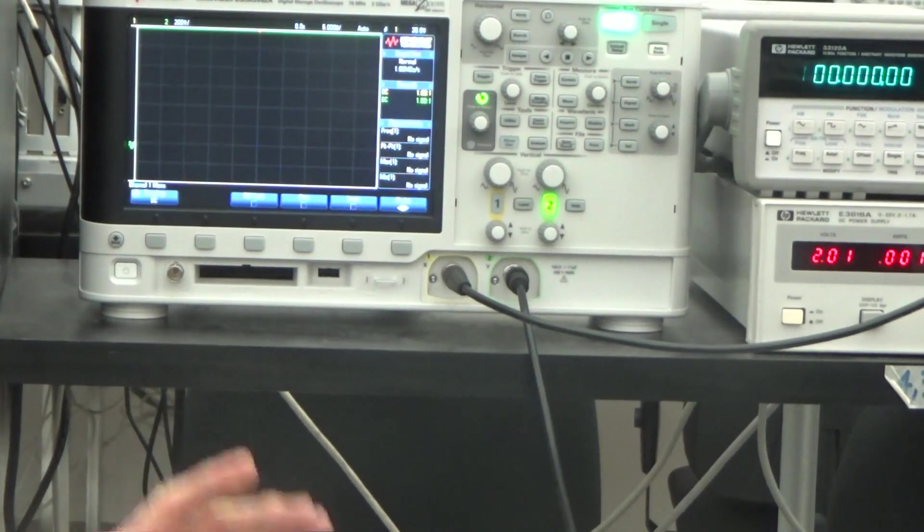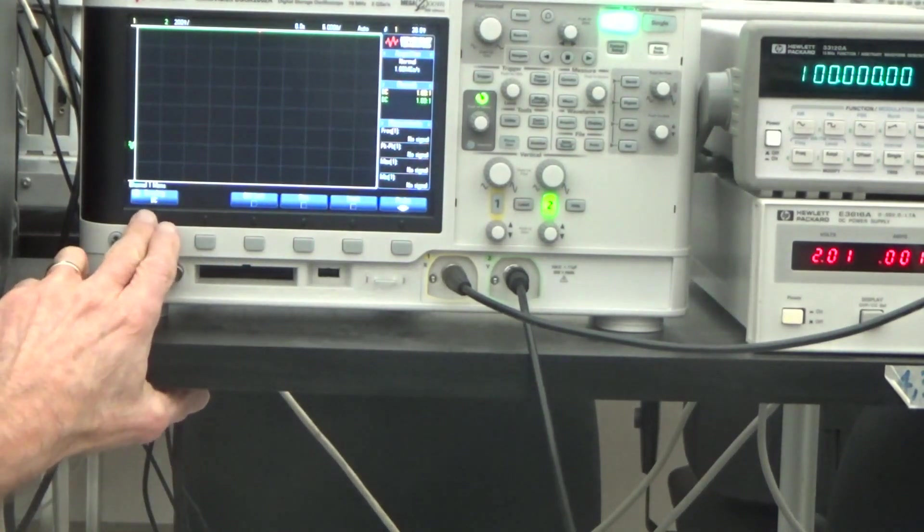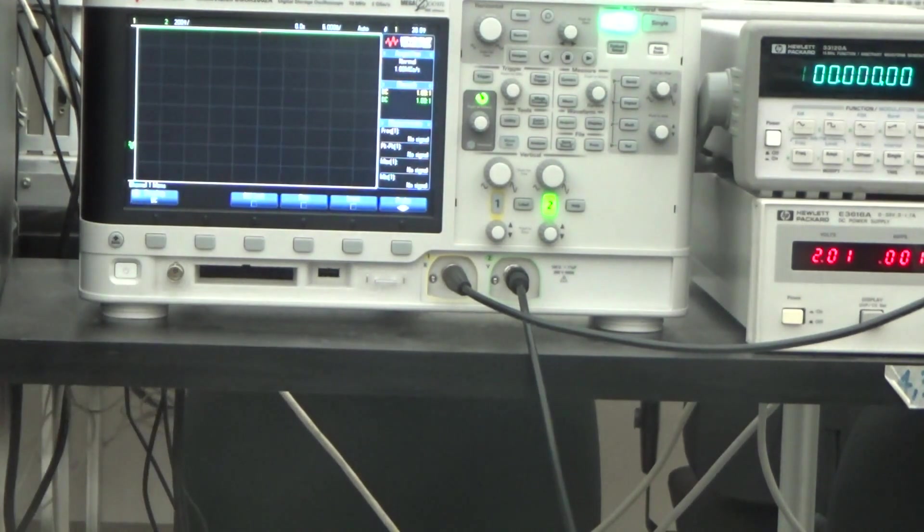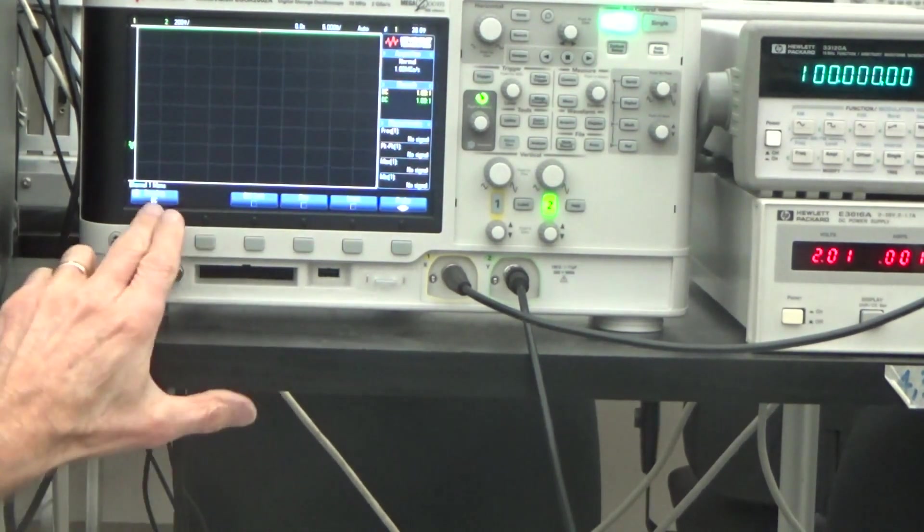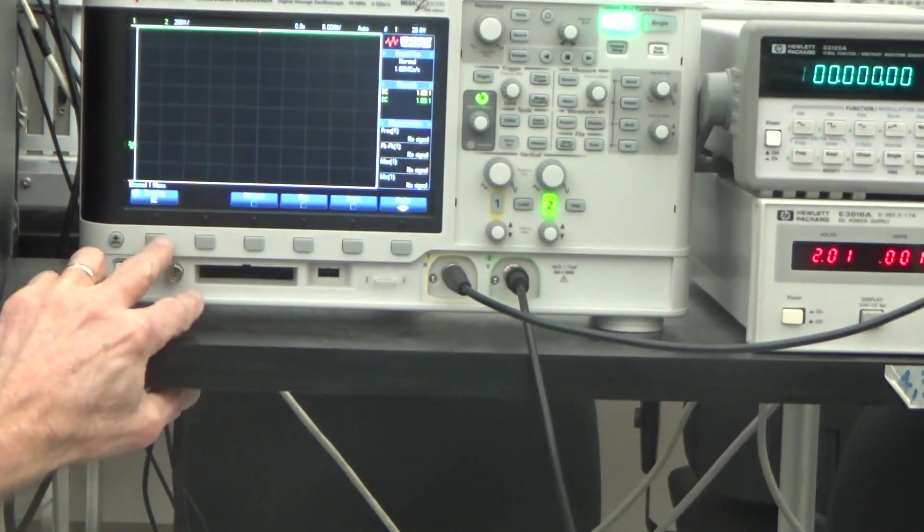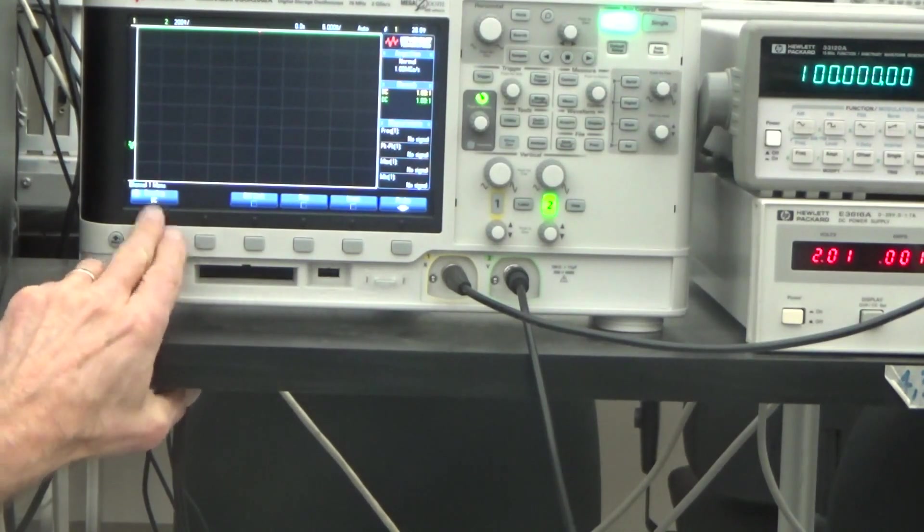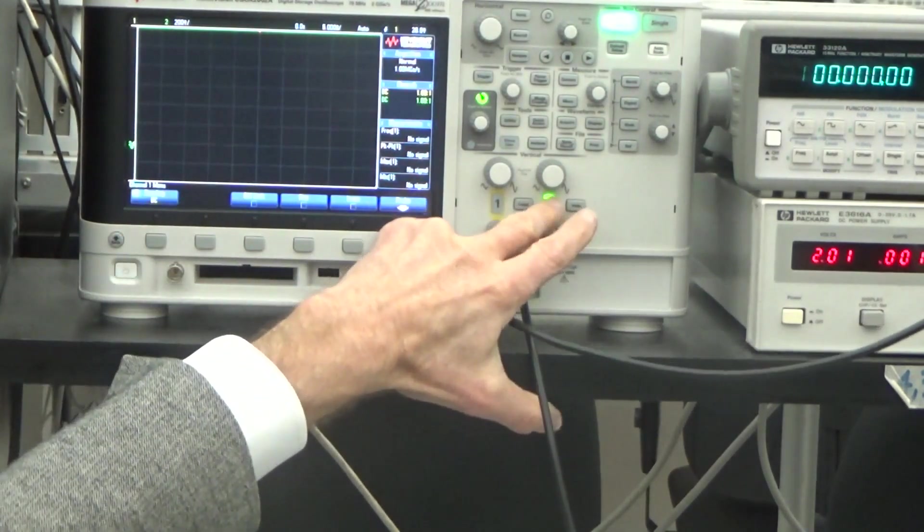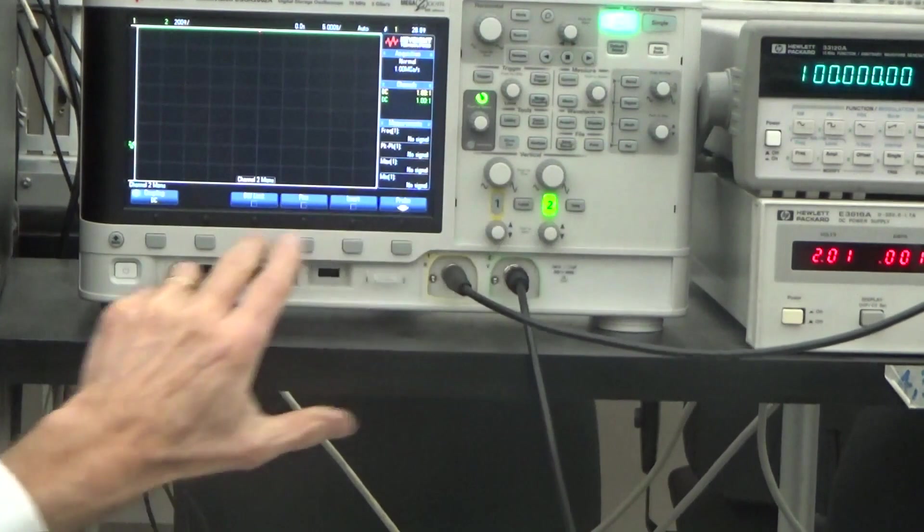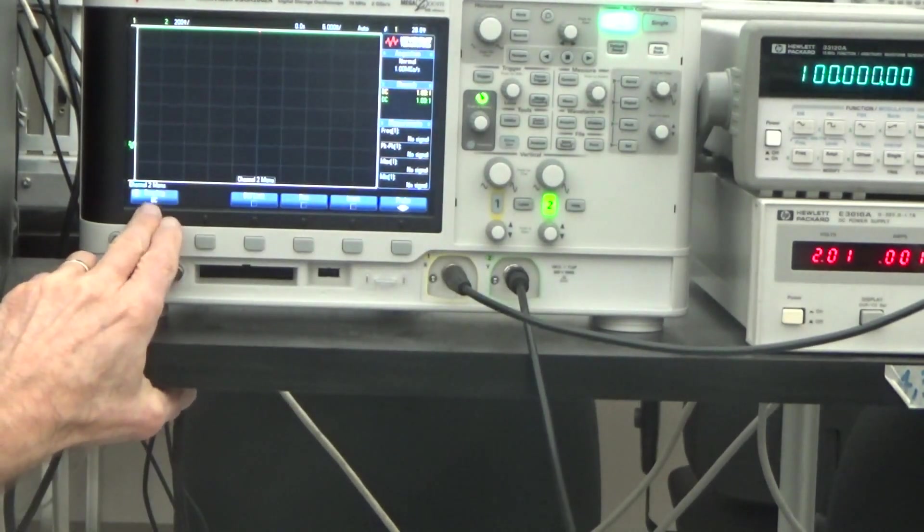There just isn't enough. And you can see that we have what is called DC coupling here. Now, if I were to, and this is the channel 1 menu, so I'm going to hit the channel 2 menu. And I still have DC coupling here, as you can see.